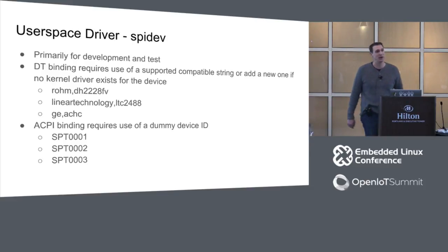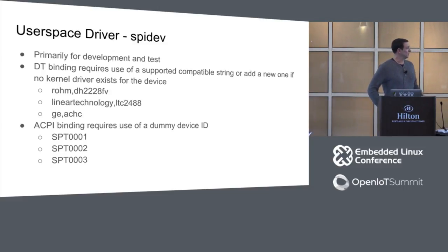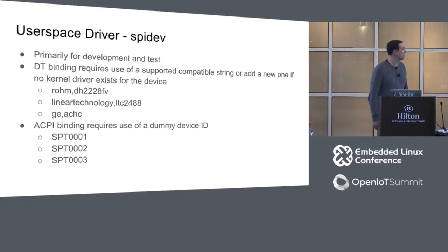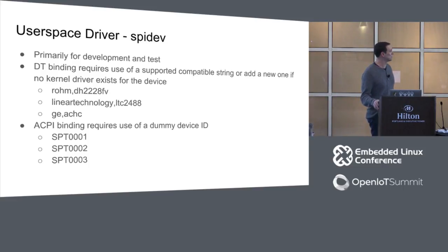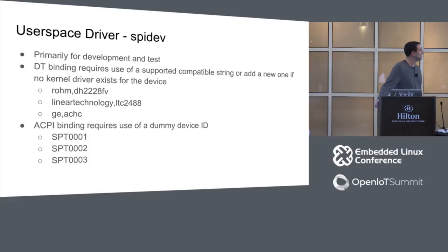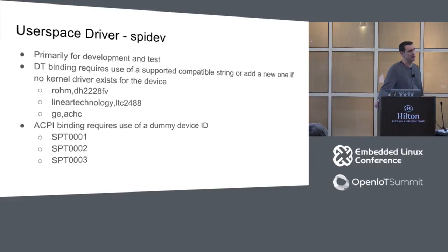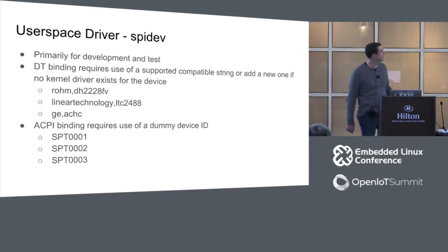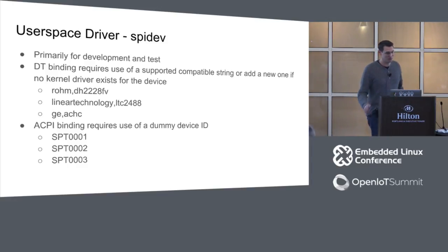To hook up spidev: if you're using the common DT case, you can leverage one of the compatible strings in upstream because you're doing testing and don't have to modify anything. Sometimes new compatible strings are accepted upstream where it's a legitimate device that won't ever have a kernel driver. In the spidev driver you can also use the board file method exactly as shown, or use the ACPI IDs that are supported if doing an ACPI override load.